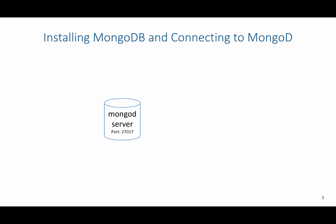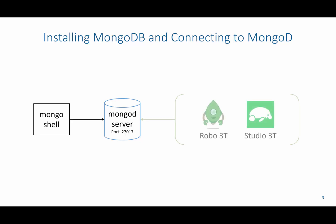So how do you install MongoDB and connect to it? You install a mongod server, which uses port 27017. You then use a shell to connect to the server and type your queries to interact with the database. Alternatively, you can use additional software such as Robo 3T or Studio 3T to connect to the database. We'll be using a custom server setup built to interact with MongoDB.